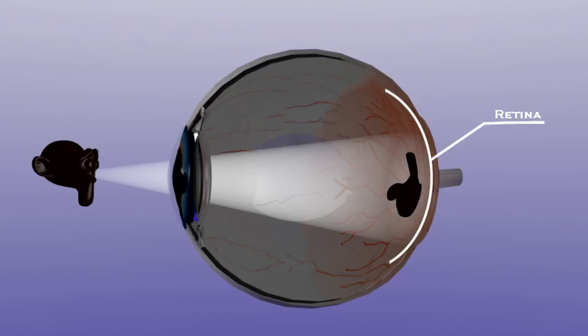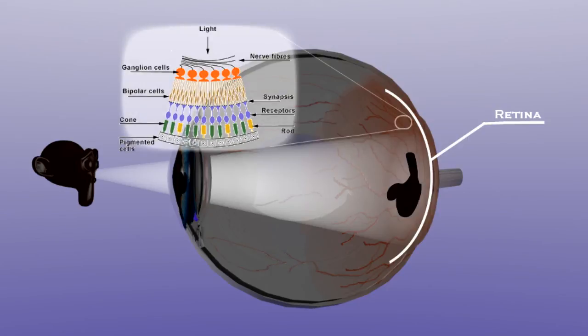Photoreceptors comprise of two types: rods and cones. Each retina comprises approximately 125 million rods. These are responsible for peripheral vision and function best in dim light.